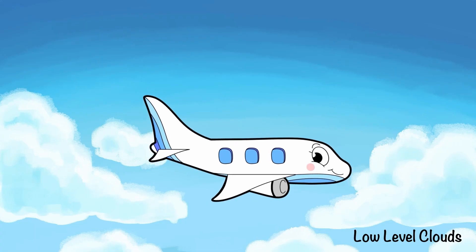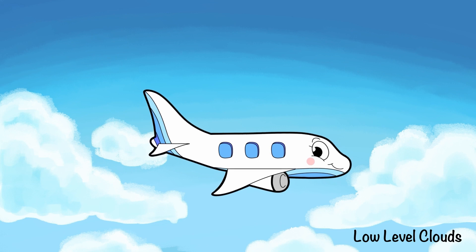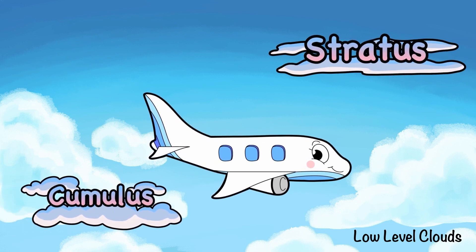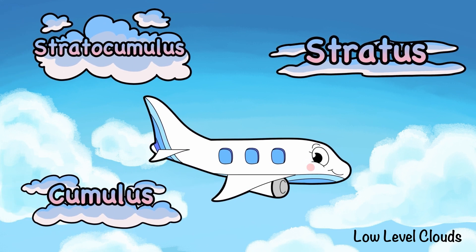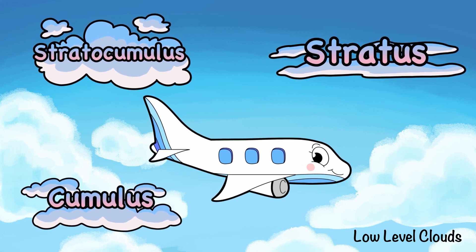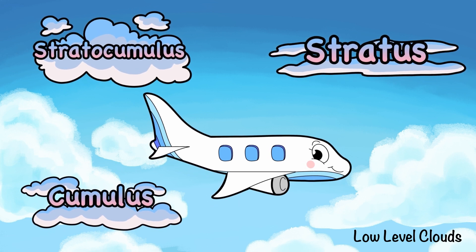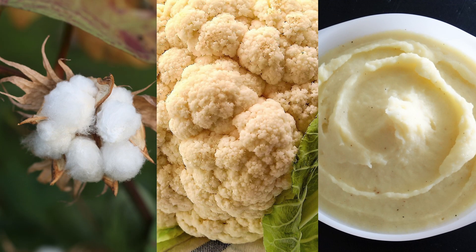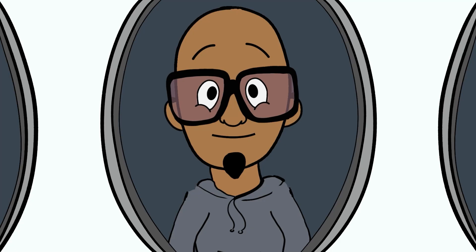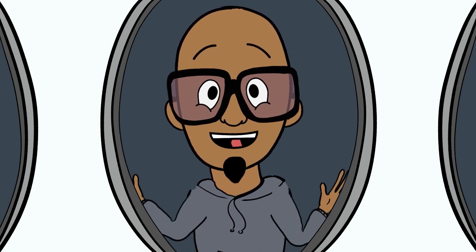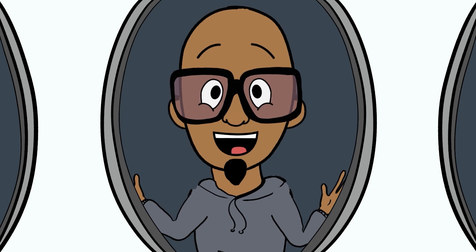These are the lowest-level clouds. The low-level clouds include the cumulus, stratus, and stratocumulus clouds. They are big, fluffy, and white. Cumulus clouds can look like balls of cotton, cauliflower, or even mashed potatoes. I don't know about you, but I'm starting to get hungry. Let's see some more clouds — onward, baby!